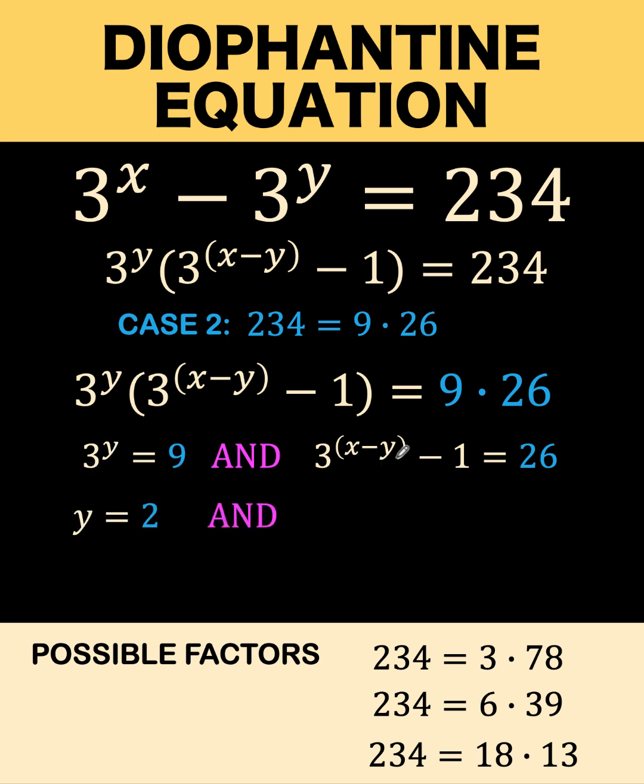Here, if y is 2, this becomes x minus 2 in the exponents, and we add 1 to both sides to get 26 plus 1 equals 27. Then 27 can be expressed as 3 raised to the 3rd, and at the left side, we have 3 raised to x minus 2.